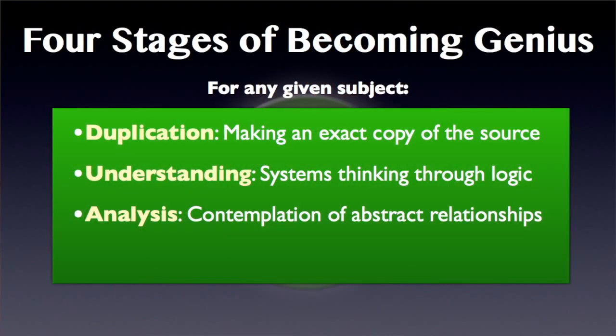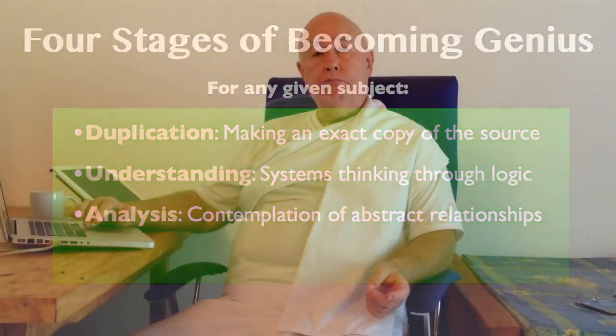You can do that too. The third stage is called analysis — the contemplation of abstract relationships. We've duplicated the subject matter and made a model in our own mind. Now we're going to analyze that model and abstract the relationships among its pieces. This is an analysis of ontological relationships, and we'll get to ontology in a minute.